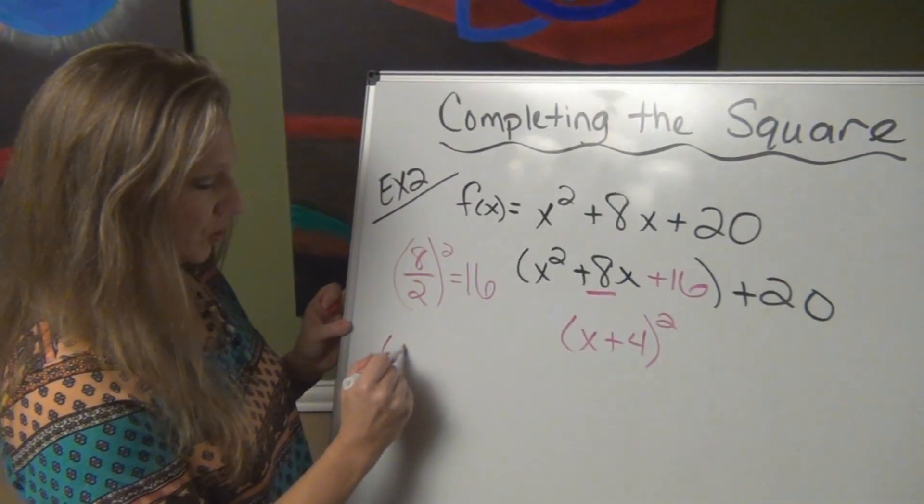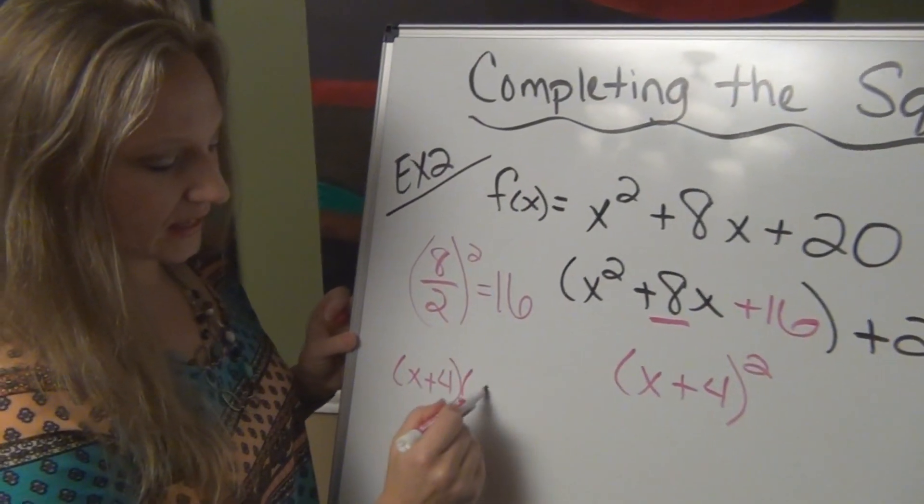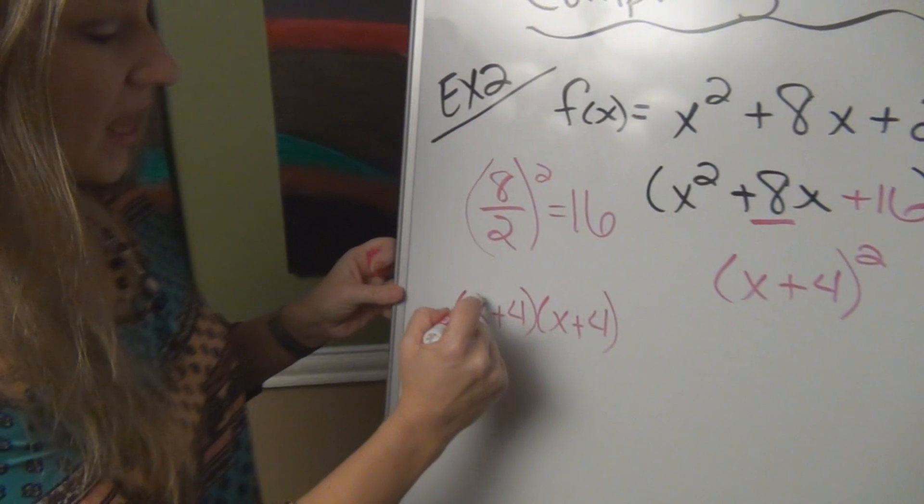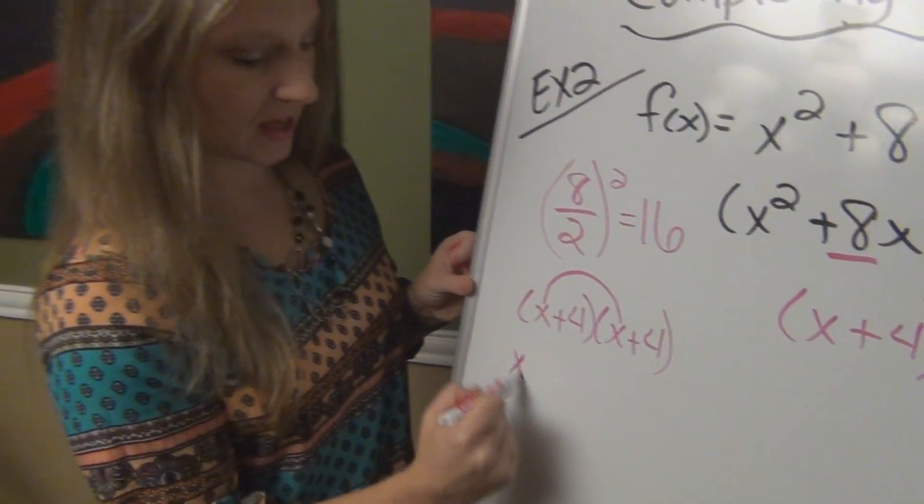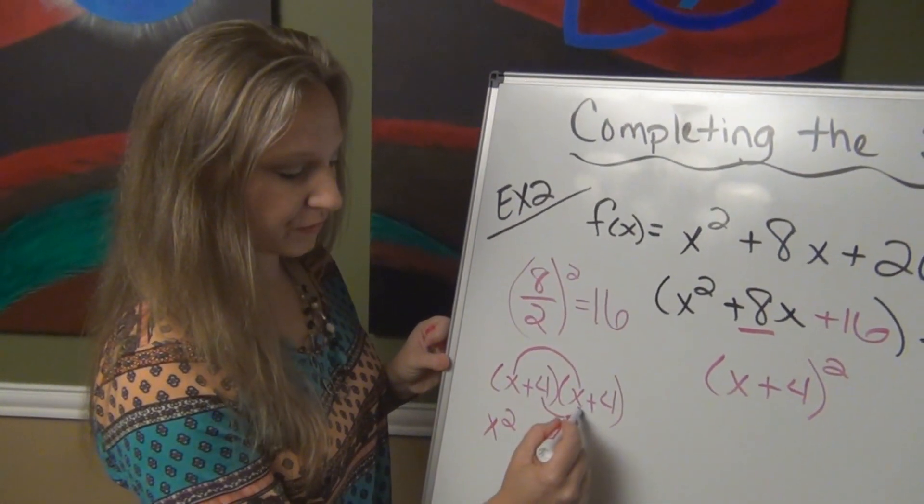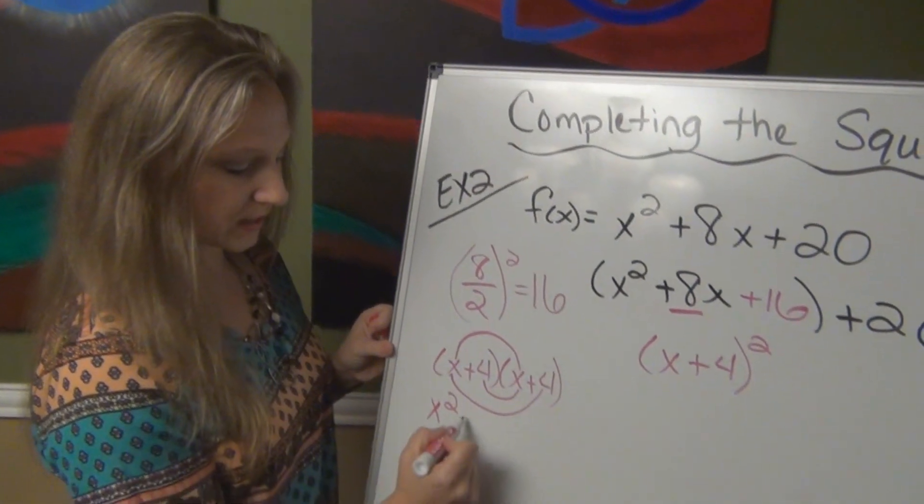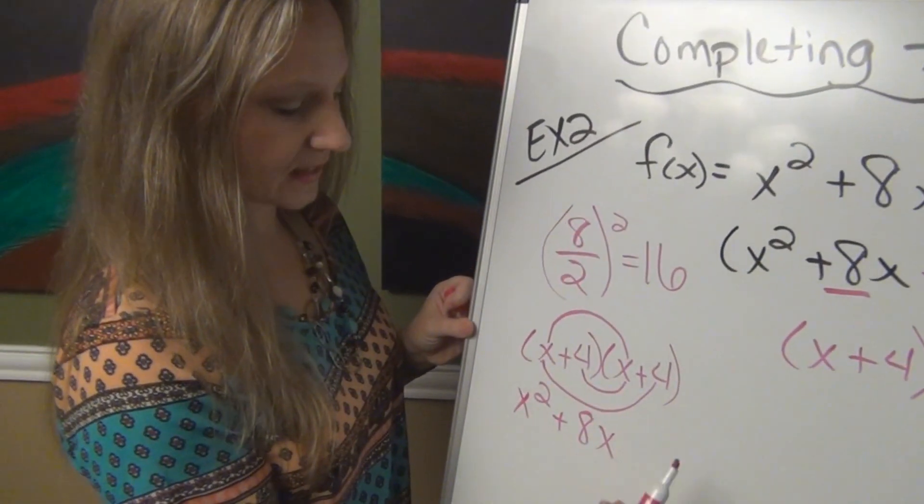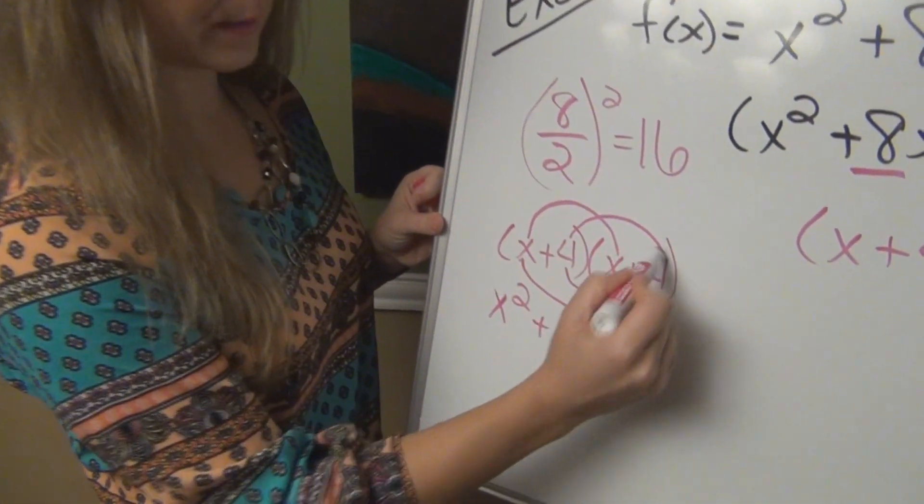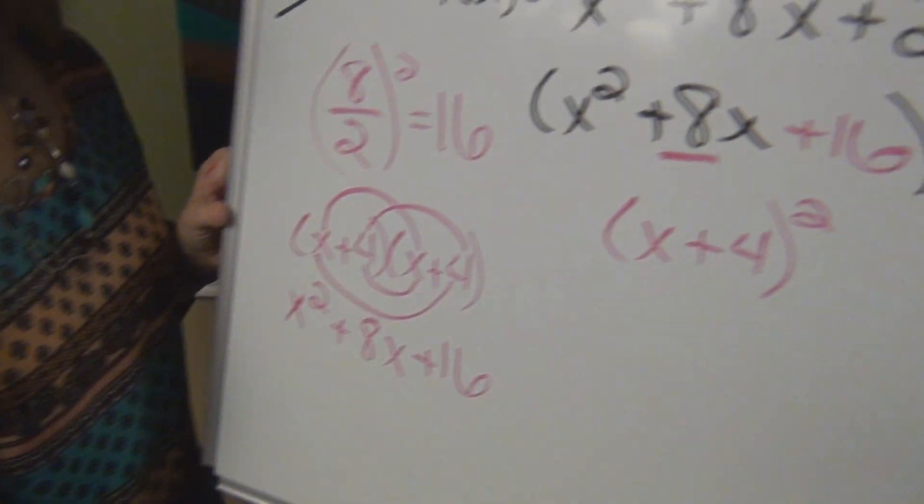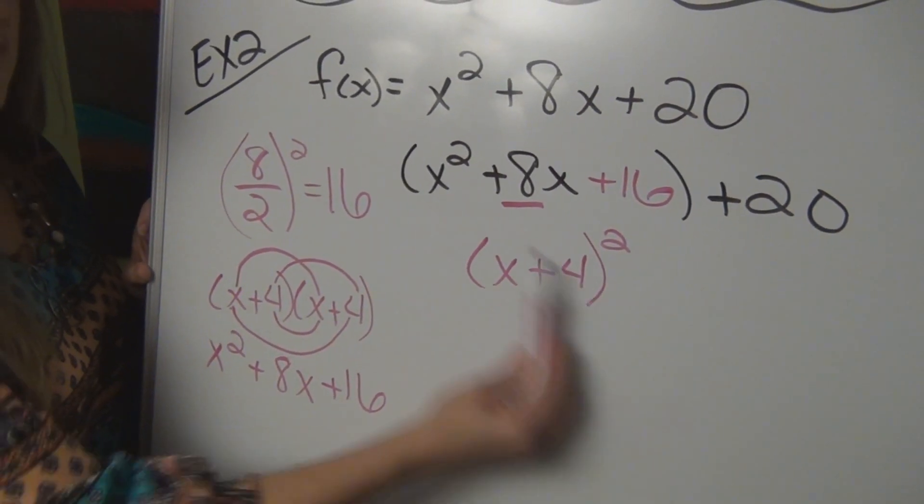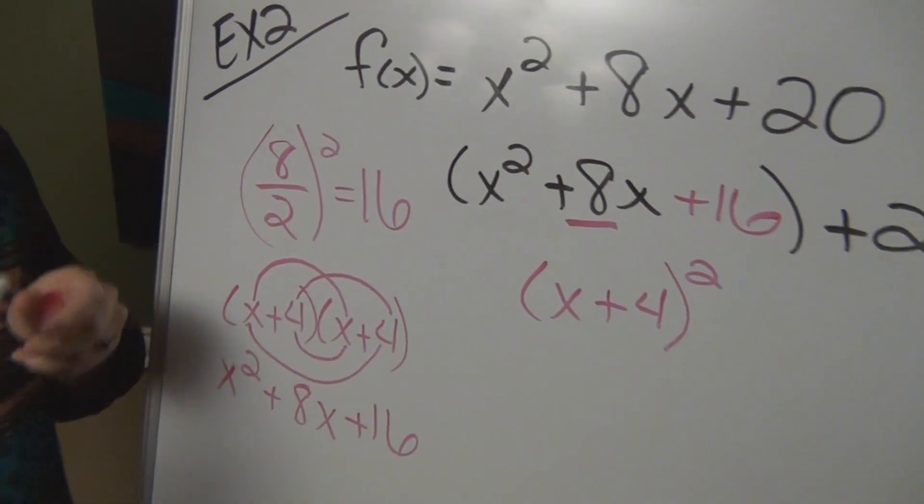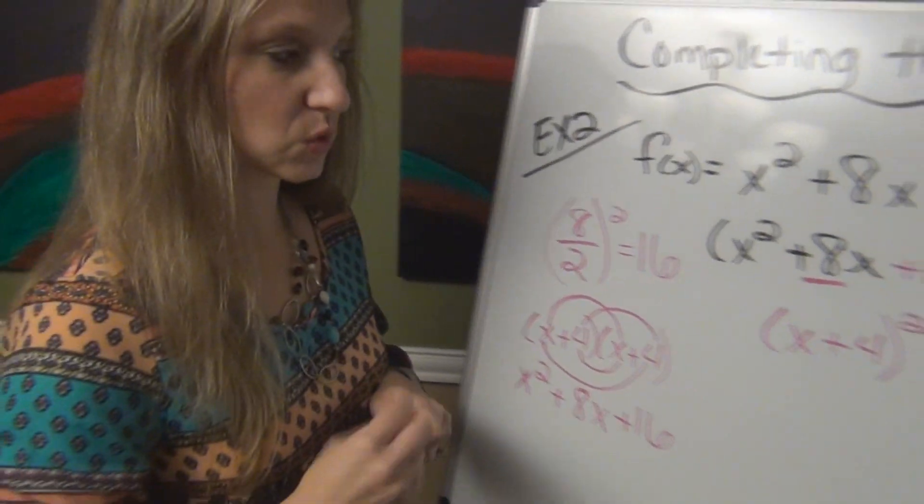So if I multiply x plus 4 times x plus 4, x times x, x squared, I have a 4x and a 4x combines to be 8x, and last I have 4 times 4 to get 16. So you can see that this actually does multiply out to be that. So we have created that perfect square.